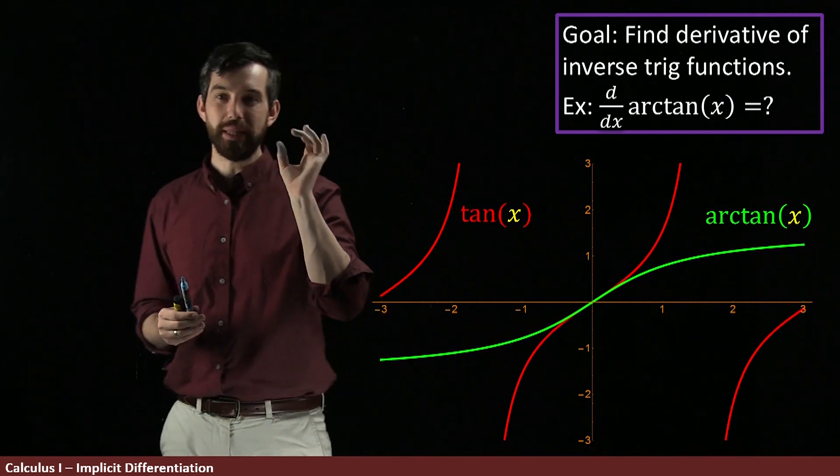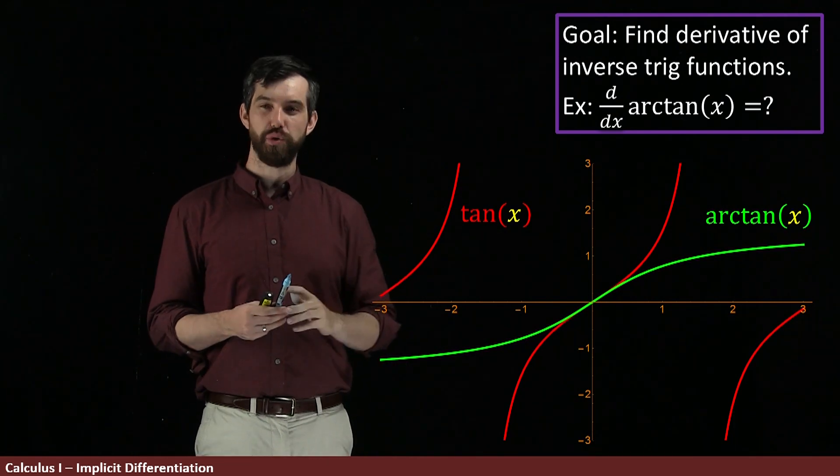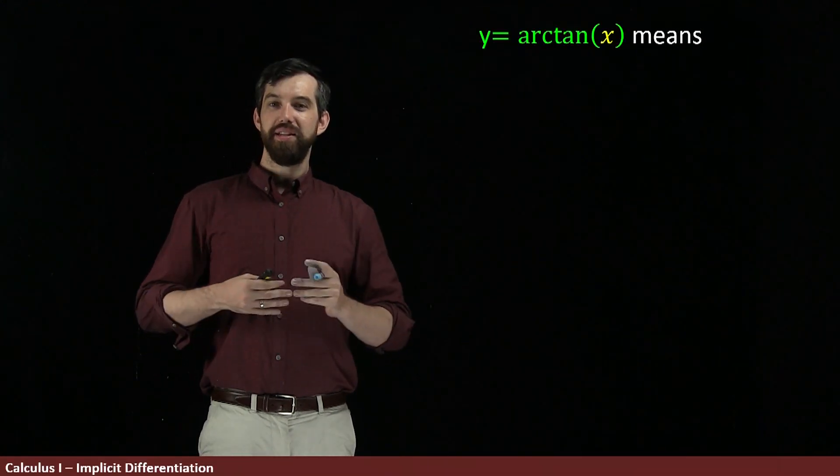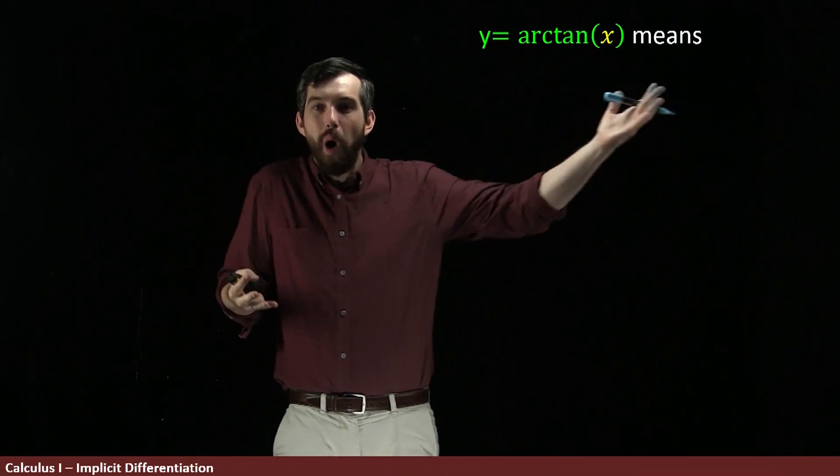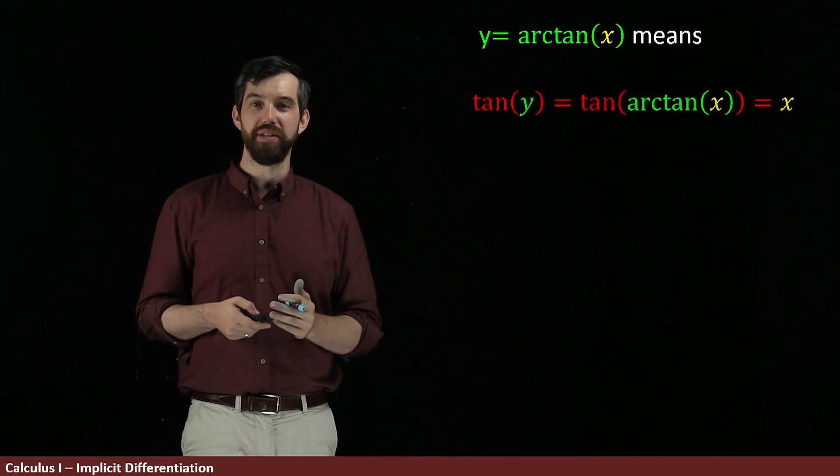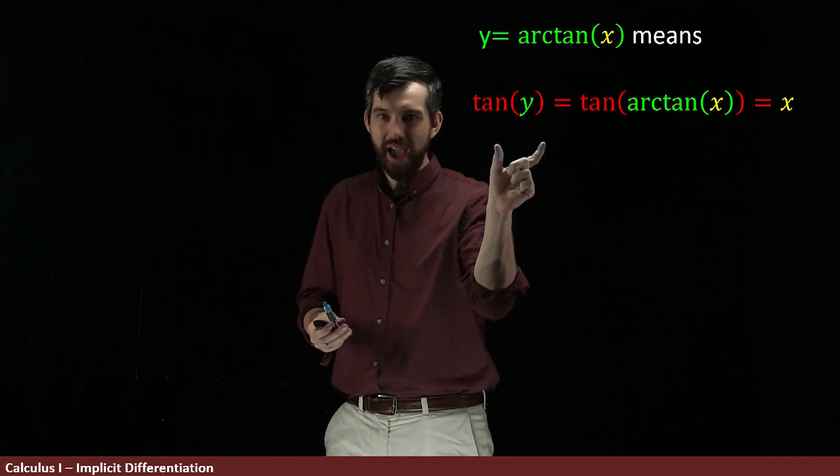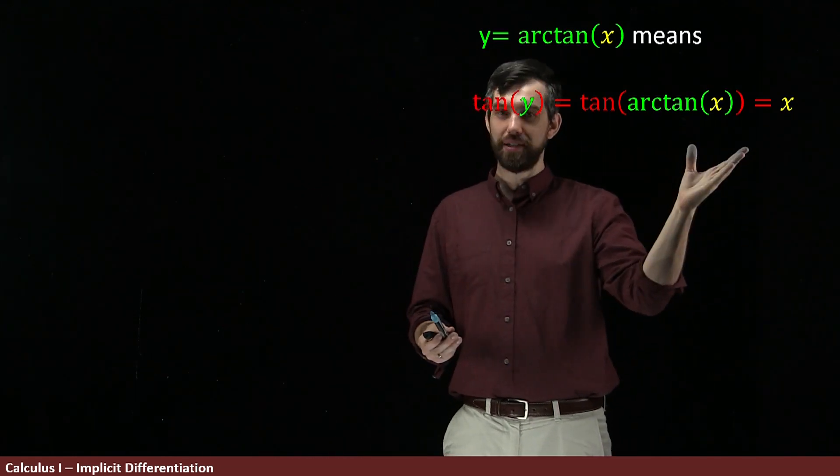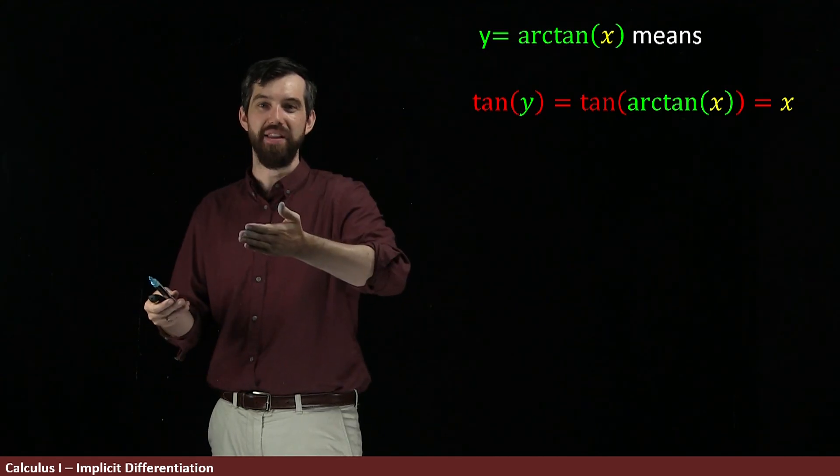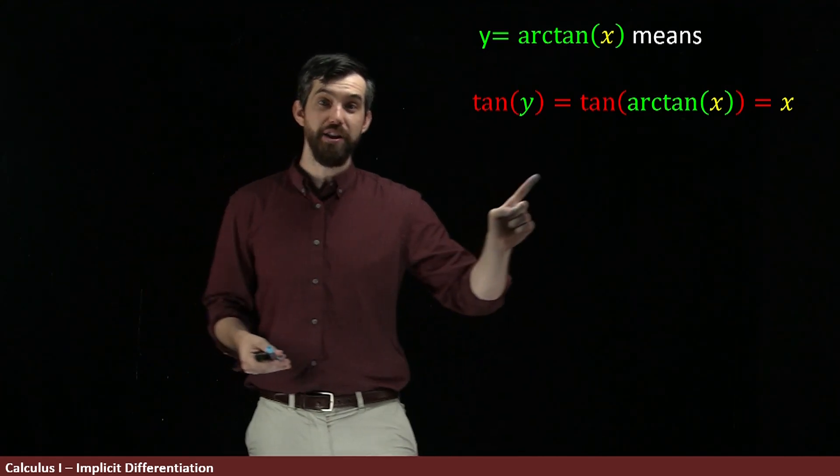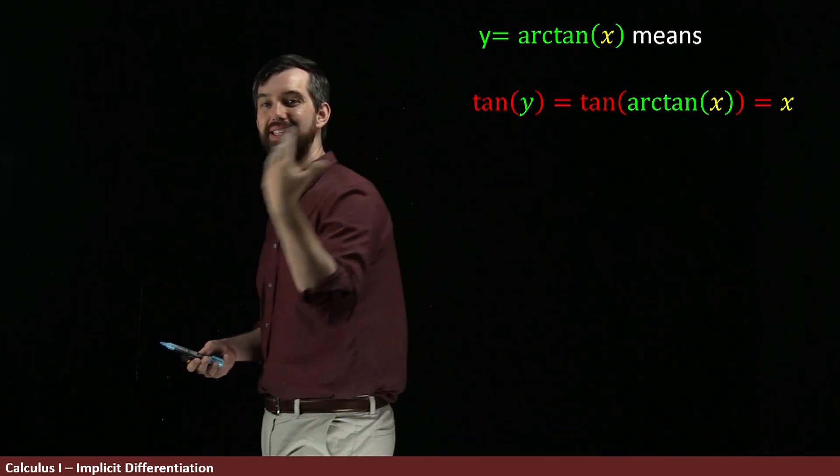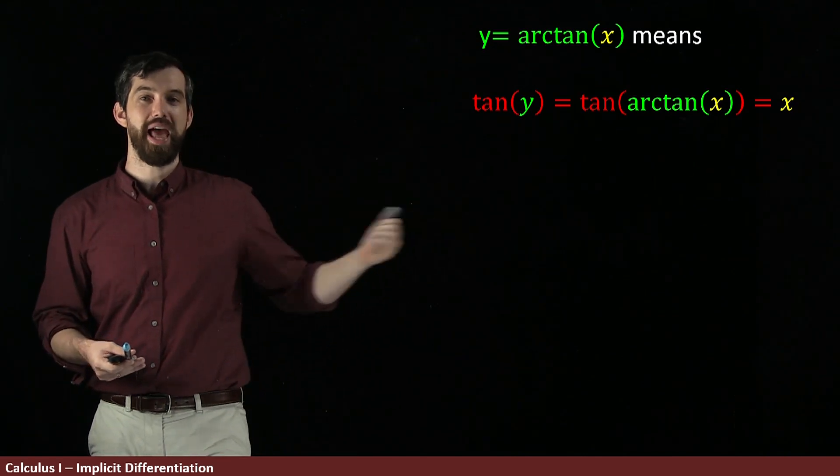What we can do is we can use implicit differentiation to answer these questions. I want to remind you that the definition of saying that y was arctangent of x, what that meant was I could invert it the other way around, I could come and take tan of y and get tan of my arctangent, and because they were inverse functions, the tan and arctan undo each other and you just get back whatever the inside was. So y is arctangent of x is the same thing as tan of y is just equal to x.